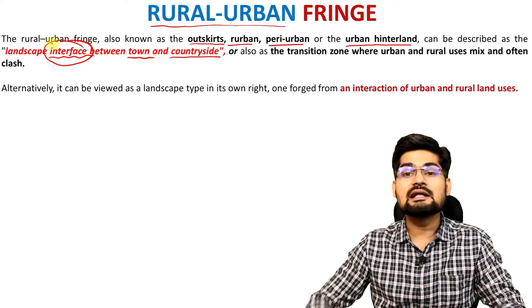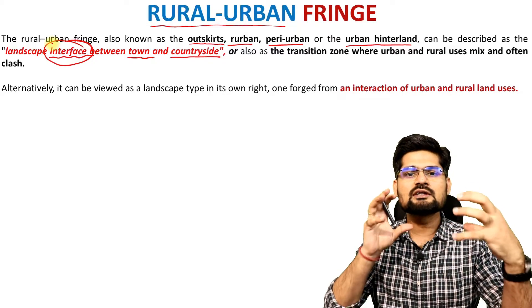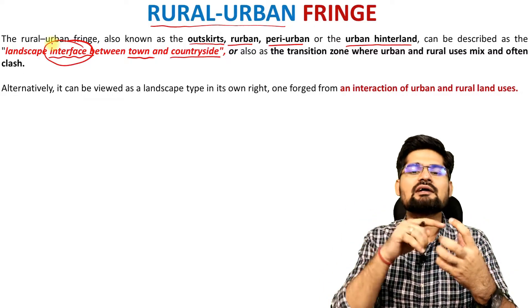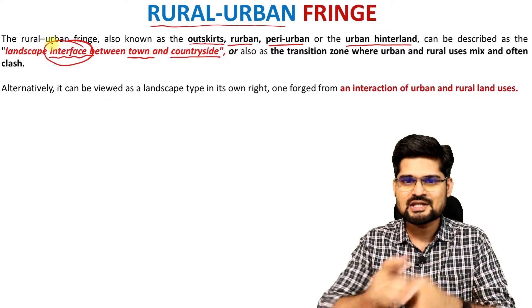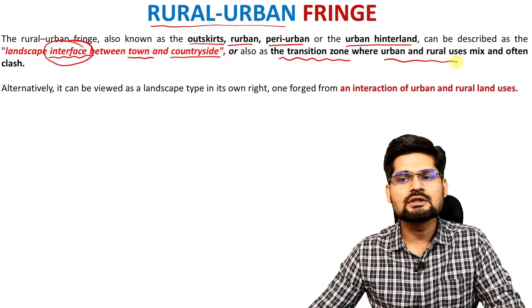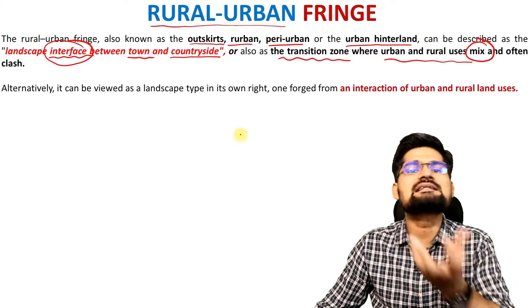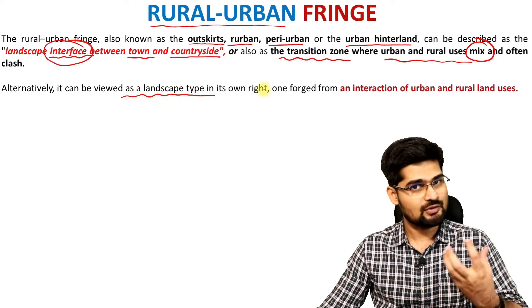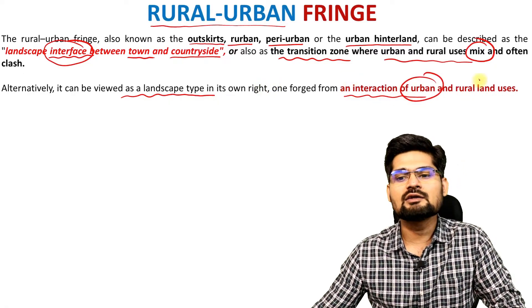The key word to catch here is interface — between two different entities. Rural areas and urban areas have an interface in between, and this in-betweenness is what we call the fringe, the rural urban fringe. It is also referred to as the transition zone where urban and rural uses of land exist together — an area of mixed land use. Alternatively, it can also be viewed as a landscape type in its own right, one forged from an interaction of urban and rural land uses.